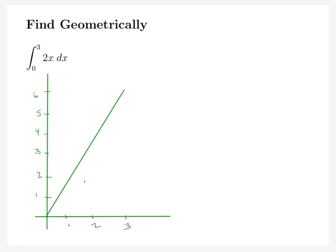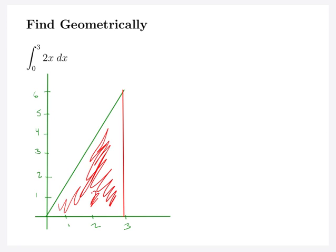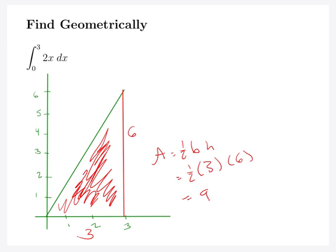Similarly, with this linear function here, we just have a nice little triangle going from x = 0 all the way up to x = 3. We've got a nice triangle, and we know we're looking at half the base times the height. Our base is three units, our height is six, so we're looking at half times three times six, which is nine units squared. With these types of functions we can find areas just using geometric shapes.